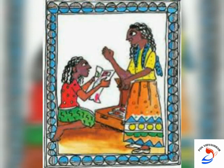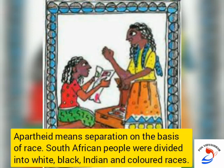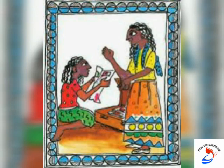Her mother explained that South Africa was earlier governed by apartheid laws. Apartheid means separation on the basis of race. South African people were divided into white, black, Indian and colored races. According to the law, these races were not allowed to mingle with each other, to live near each other, or even to use common facilities.